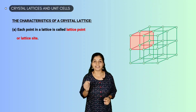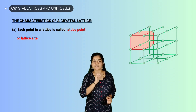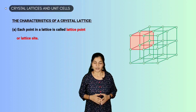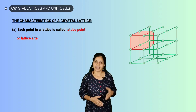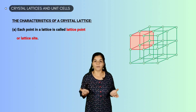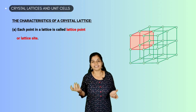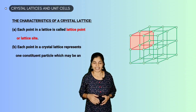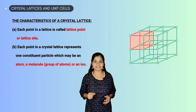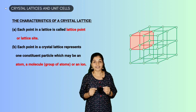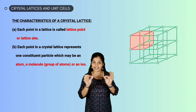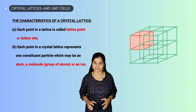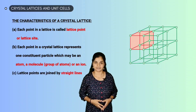Each point in a crystal lattice represents one constituent particle, which may be an atom, molecule, group of atoms, or ions. Lattice points are joined by straight lines to bring out the geometry of the lattice.